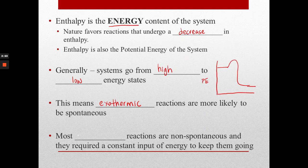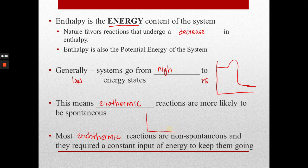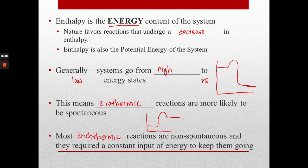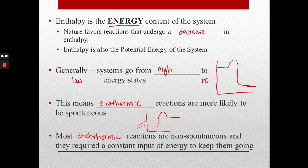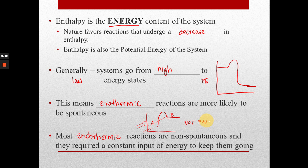And then the flip of that would be that most endothermic reactions are more likely to be non-spontaneous. That's because in order to get an endothermic reaction, you have to get over that activation energy hump, but you have to have a constant influx of energy to continually raise your reactants up to the product level. So this is actually not the favored. That's what we say in chemistry. It's not favored, it's not the easy way, it's not the easy route.